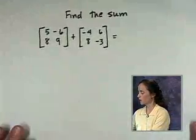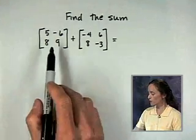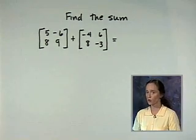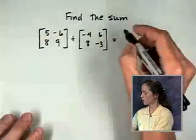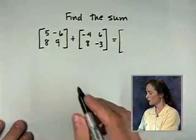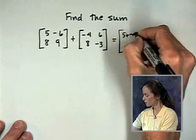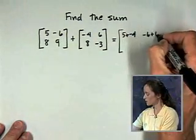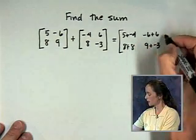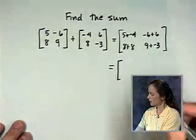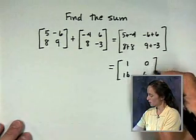We want to find the sum. It is important to note that you can only add matrices if their orders or dimensions are exactly the same. Both of these are two by two. The result is found by adding corresponding entries: 5 and negative 4, negative 6 and 6, 8 and 8, and 9 and negative 3. Simplifying, I end up with the matrix 1, 0, 16, 6.